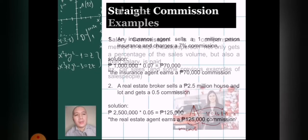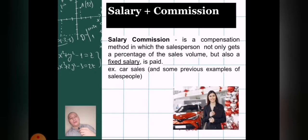Now let's go to the next example which is salary plus commission. From the term itself, there is a salary now. With salary commission, it is a compensation method or scheme in which the salesperson does not only get a percentage but also a fixed salary is paid. A common example of that would be car sales agents.